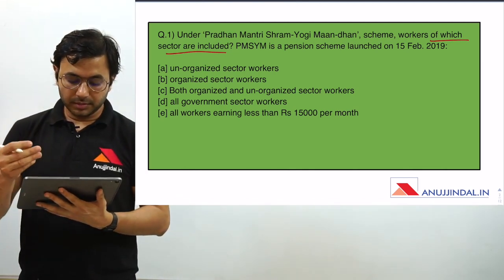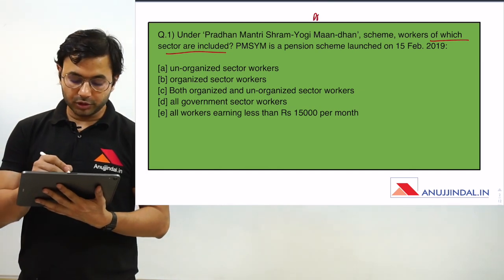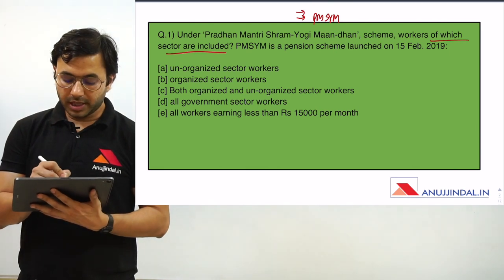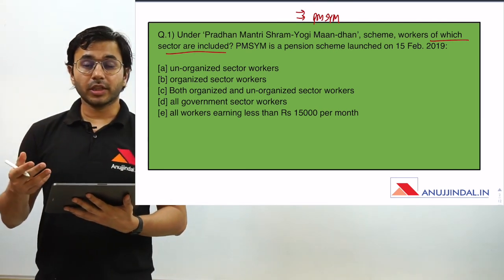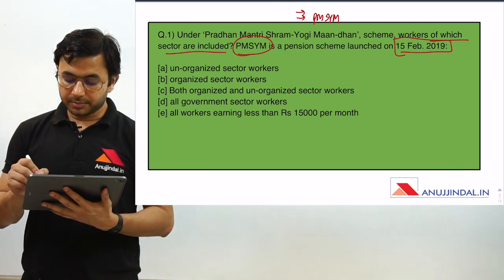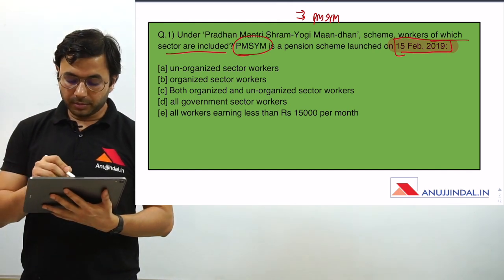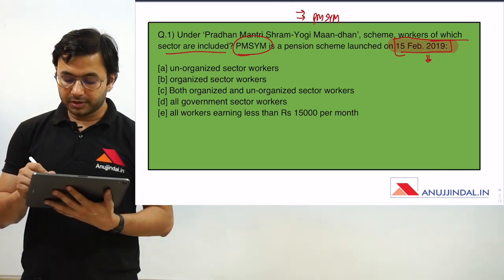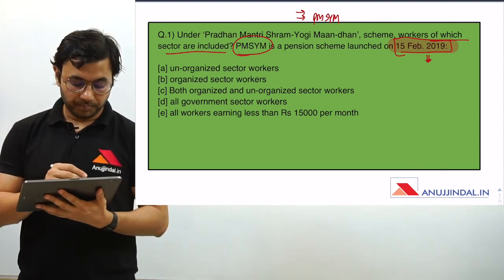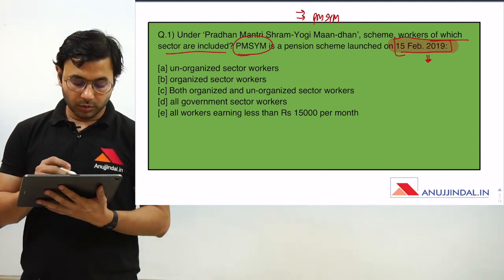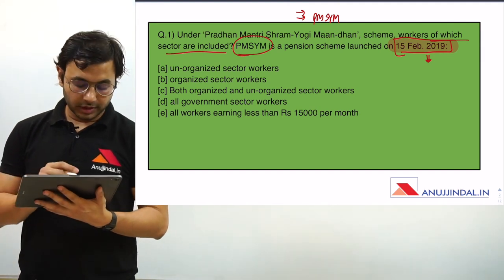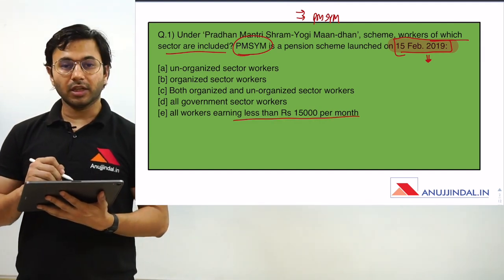First of all, you need to remember that Pradhan Mantri Shram Yogi Mandhan Yojana — the acronym is PMSYM — because RBI and SEBI are notoriously famous for giving out such acronyms. It is a pension scheme launched on 15th February 2019. That date can be asked directly in the exam. The options are: A) unorganized sector workers, B) organized sector workers, C) both organized and unorganized, D) all government sector workers, and E) all workers earning less than ₹15,000 per month.